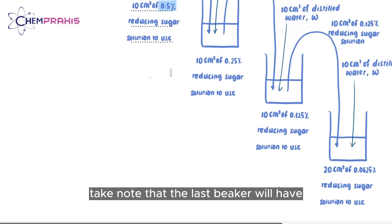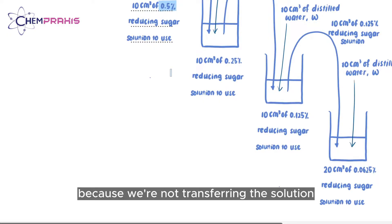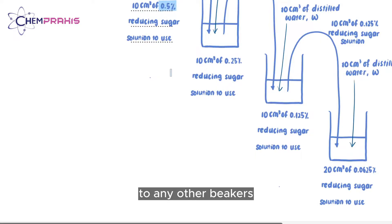Take note that the last beaker will have 20 cm³ of reducing sugar solution because we're not transferring the solution to any other beakers.